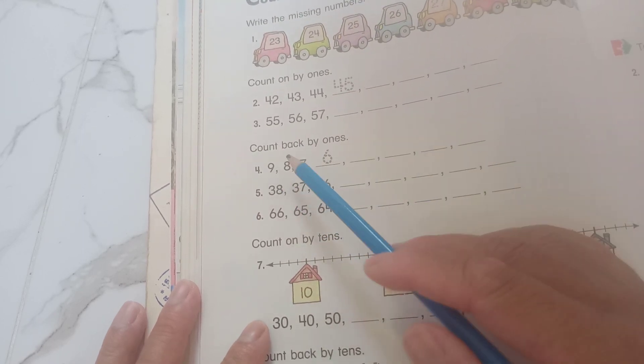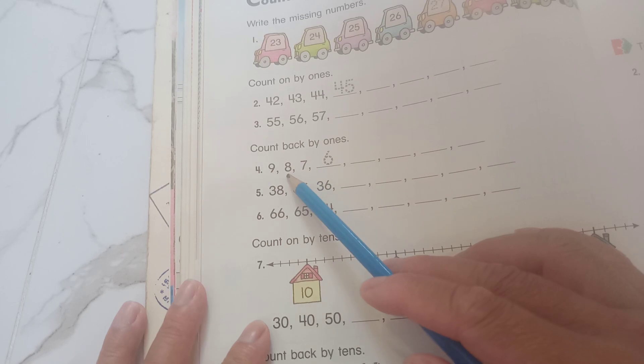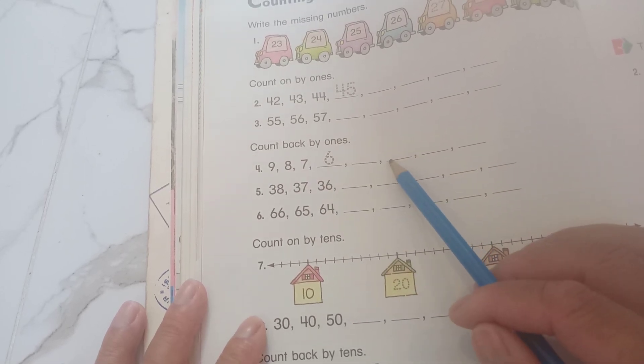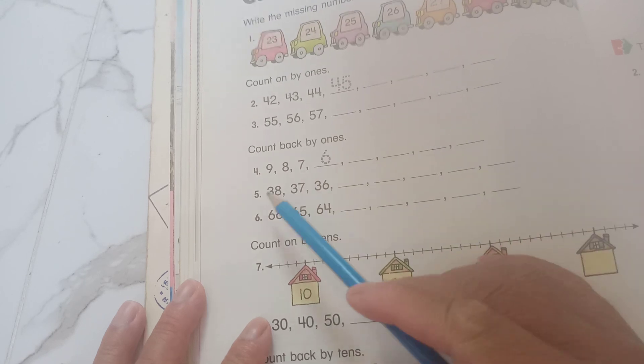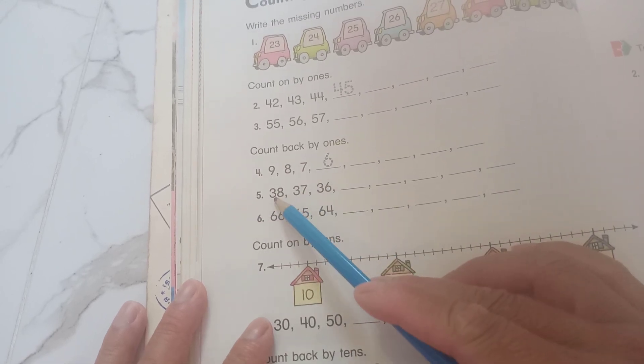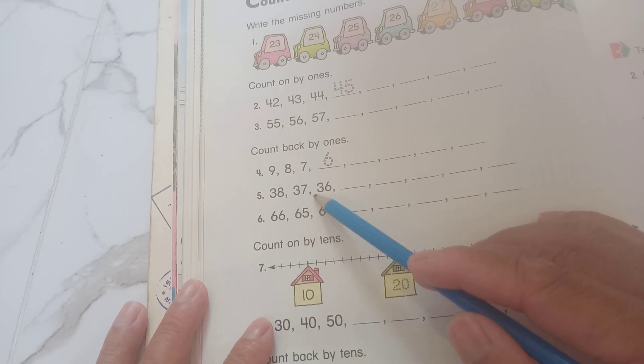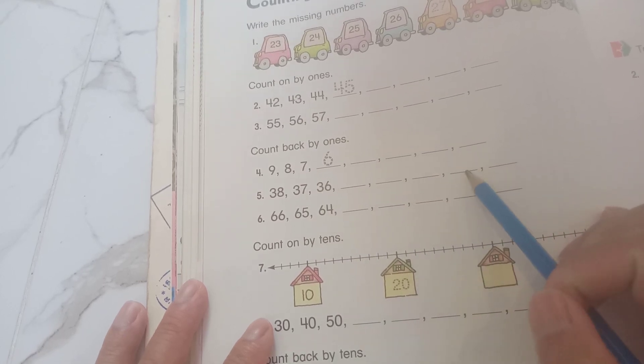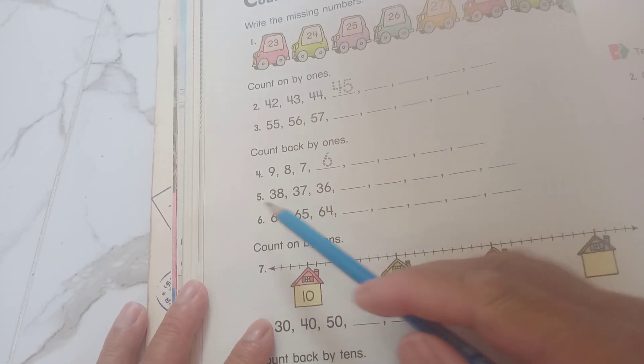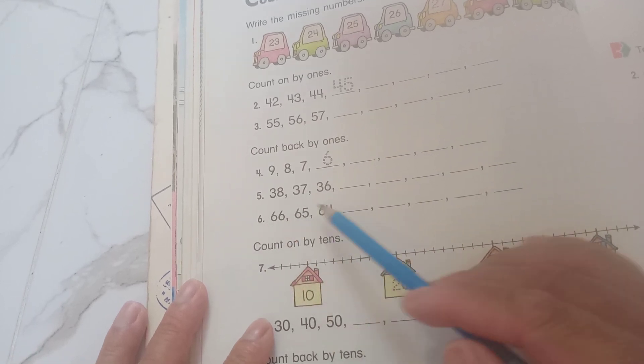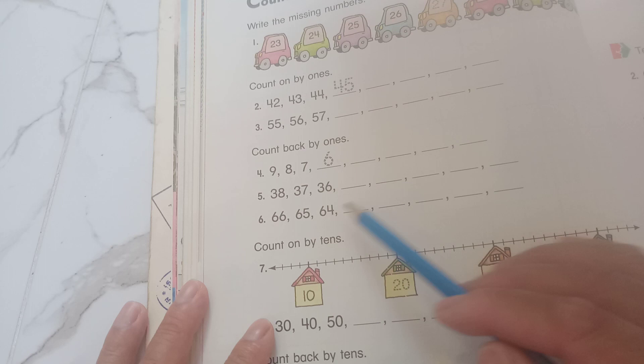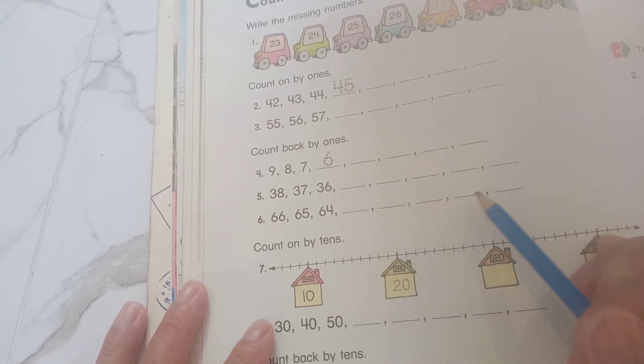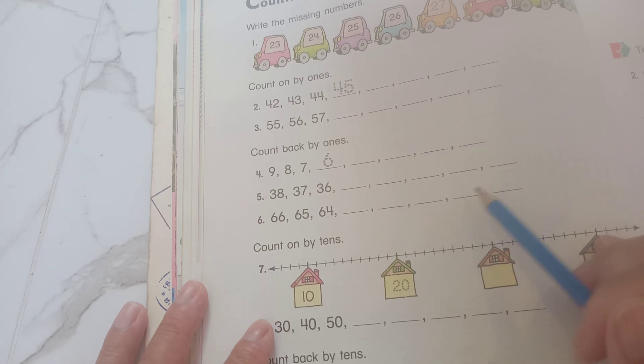And count back by ones. Number 4: 9, 8, 7, 6, 5, 4, 3, 2. Number 5: 38, 37, 36, 35, 34, 33, 32, 31. And number 6: 66, 65, 64, 63, 62, 61, 60, 59. Okay.